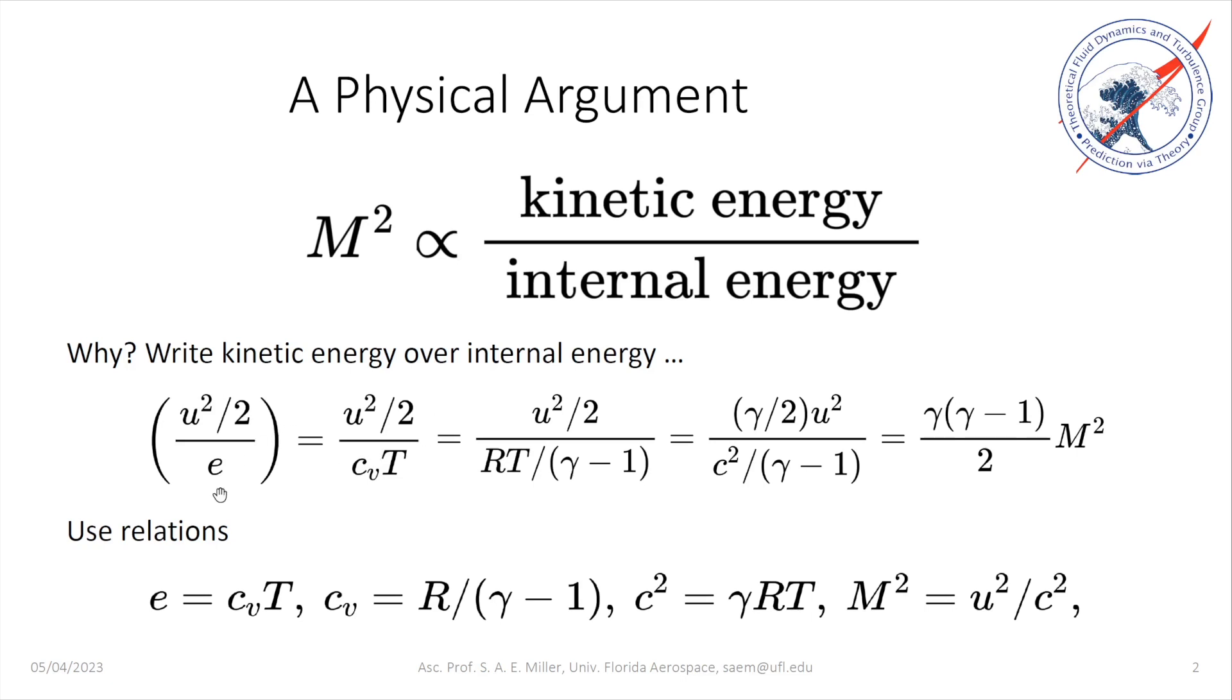We can take E in this equation and replace it by C sub V T. C sub V is the specific heat at constant volume, and T is the static thermodynamic temperature. That's shown in the second equation, E equals C sub V T. Then we'll take C sub V and replace it by R over gamma minus 1. R is the gas constant of the fluid. Gamma is the ratio of specific heats, which is C sub P over C sub V.